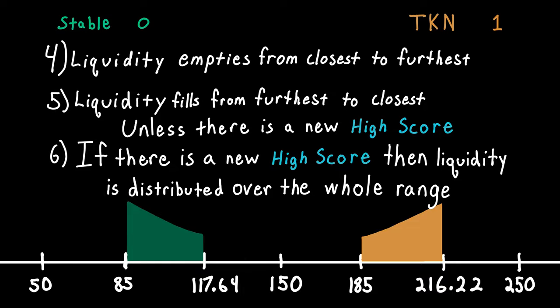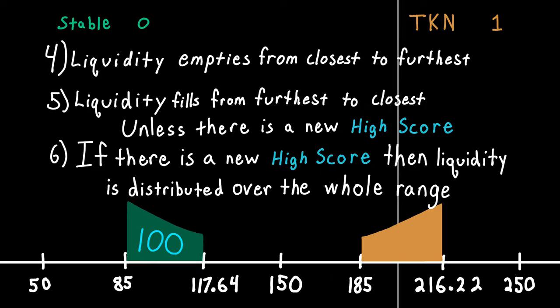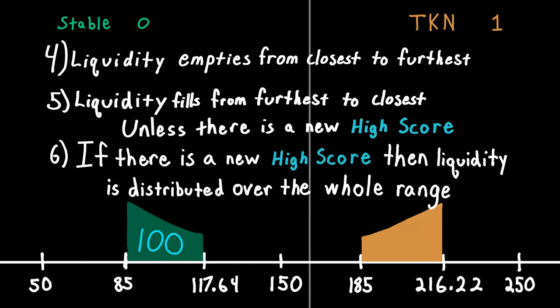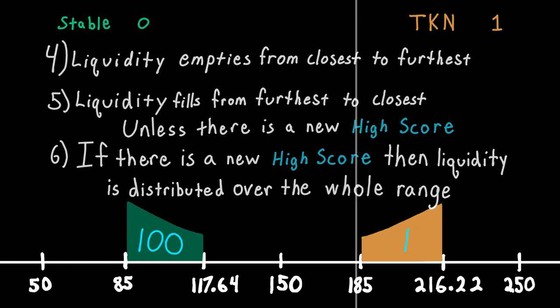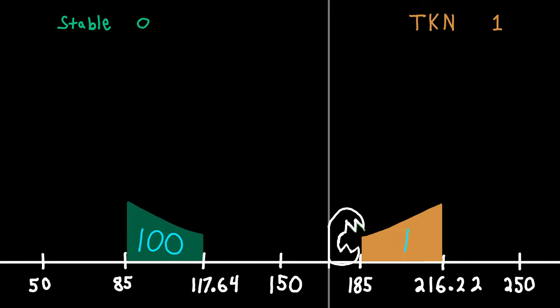The range buy has been filled and now the price pumps. The buy order is empty and the high score is 100 stable. The sell order is full and the high score is 1 TKN. When the price pumps and hits 185, traders will start taking TKN for stable.